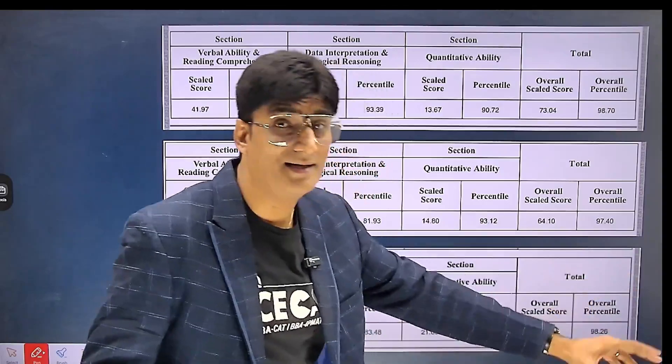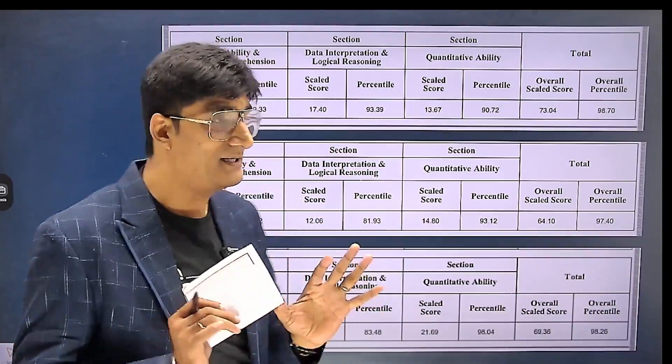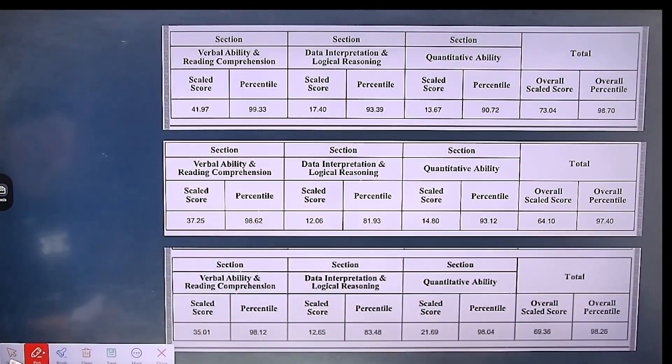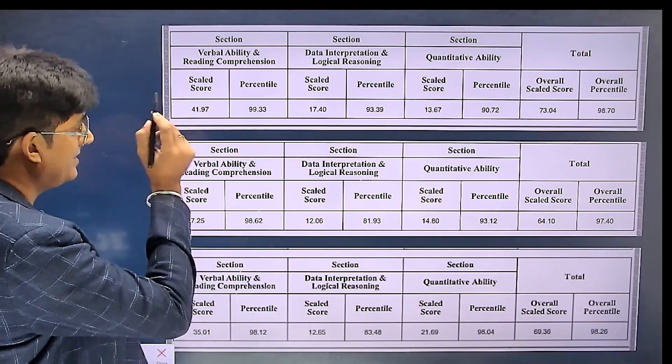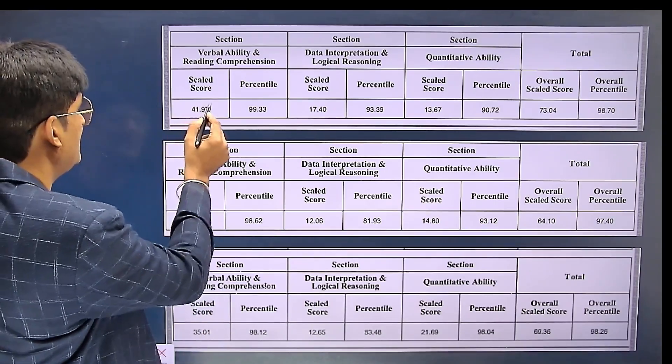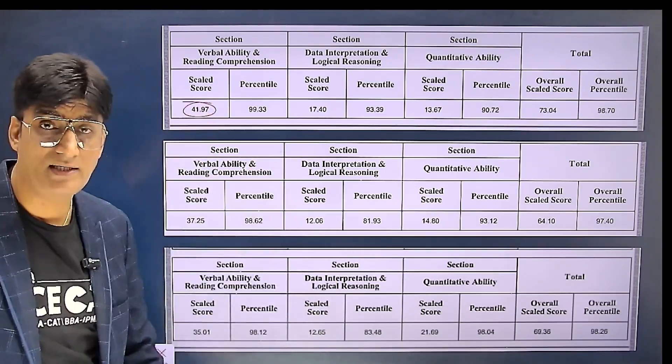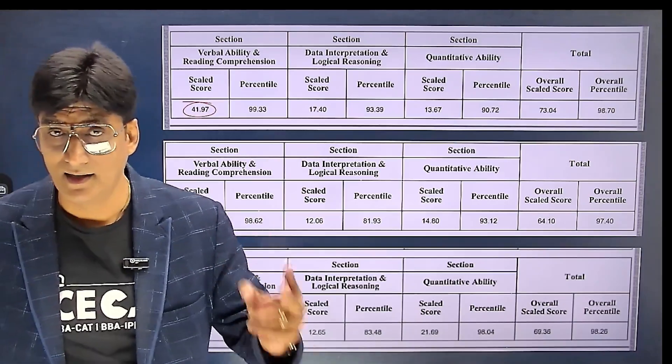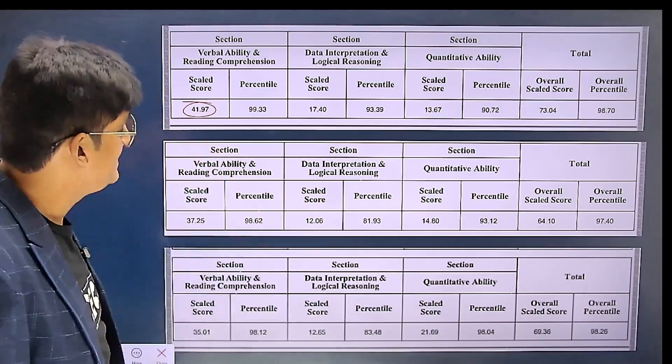Coming to slot one, this is the student's scorecard. He told me he was getting 40 in English, and here it became 41.97 - roughly plus two. In DI-LR he was telling he got 15 and actual score is 17.40.